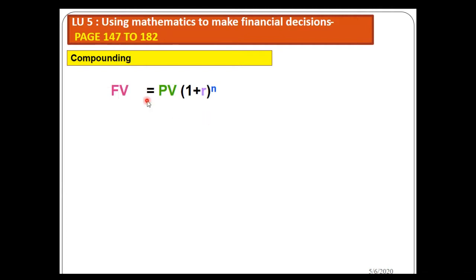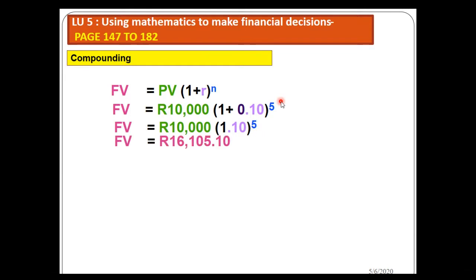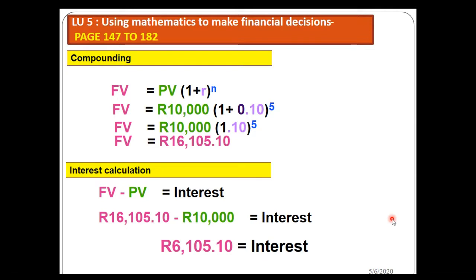Let's substitute into the formula. Future value equals the present value — 10,000 — times one plus 0.10 (which is 10% in decimal form), to the power of 5. Solving this gives a future value of 16,105.10. I can also calculate the interest generated: future value of 16,105.10 less the initial amount of 10,000 gives an interest of 6,105.10. This is how you calculate the future value under compound interest.